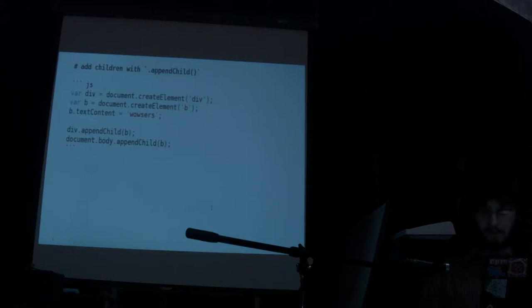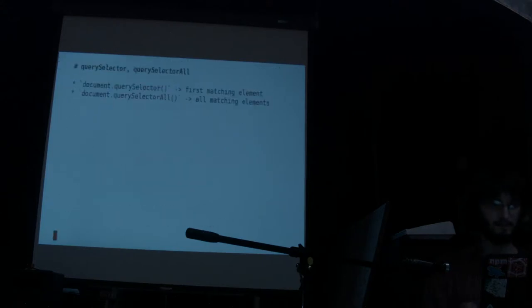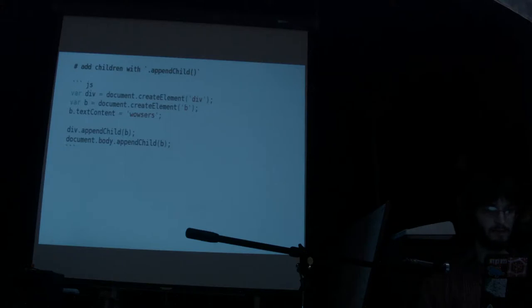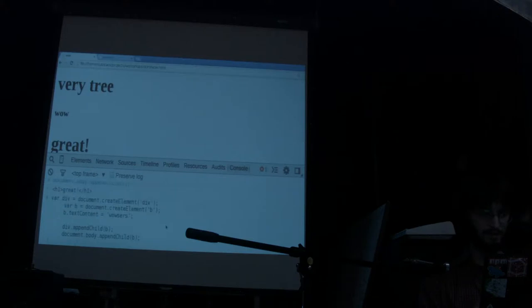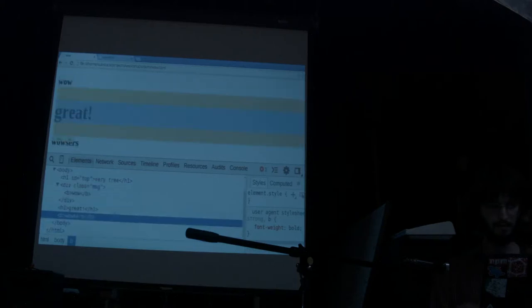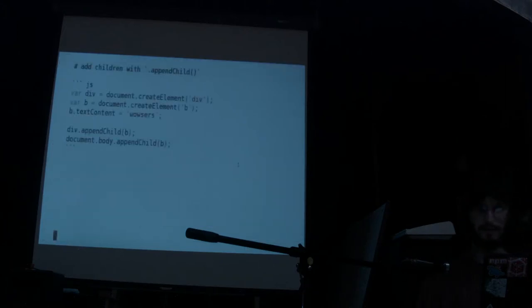We can also create multiple nested children — we can make a div, then make a bold b tag, set some content on the b tag, and append that to the DOM. If I copy paste this block of code carefully, scrolling down a little bit, there's some text 'wowzers'. A div got inserted, and we put some text inside of that as well. appendChild is how you insert nodes.